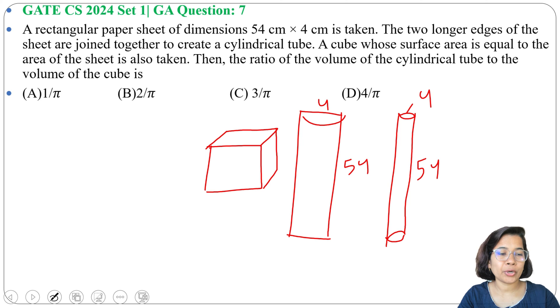Then the ratio of the volume of the cylindrical tube to the volume of the cube is, and 4 options are given. So we have a rectangular sheet and for rectangular sheet its surface area is length into breadth.